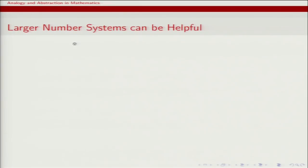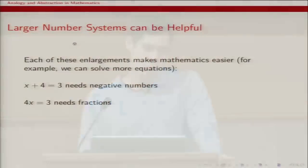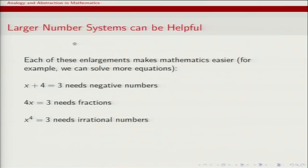Each of these number systems is an enlargement of the previous one, and for the most part the reason to consider these enlargements is that they make your life easier. Each enlargement allows you to solve equations you couldn't solve before. If you want to solve x plus 4 equals 3, you need negative numbers. For 4x equals 3, you need fractions. For x to the 4th equals 3, you need irrational numbers. But this comes at a cost: with each enlargement the numbers you're thinking about are in some sense more abstract.